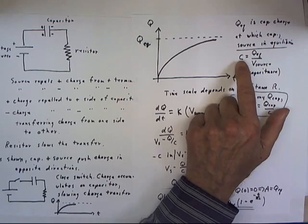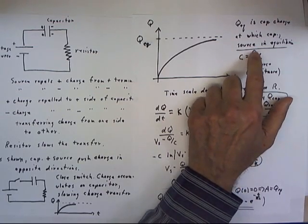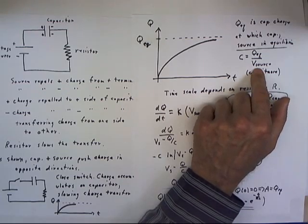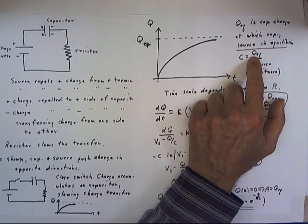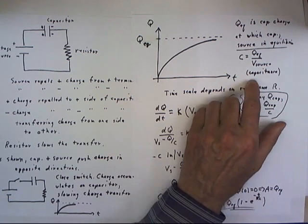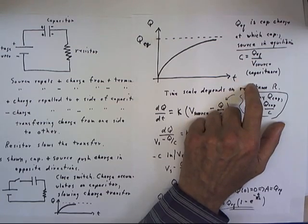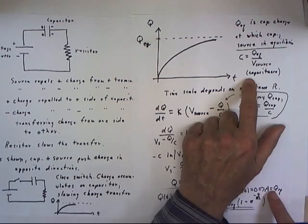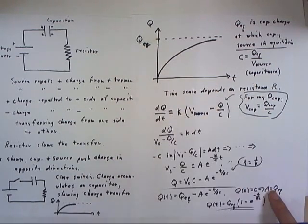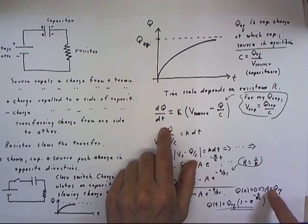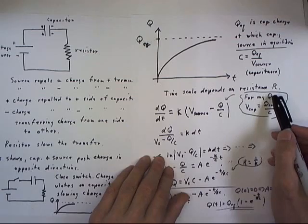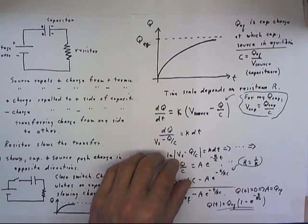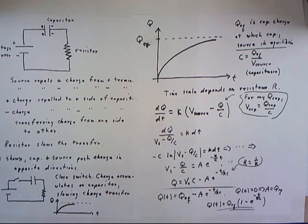We also define C, which we call the capacitance, to be the ratio of that equilibrium charge to the source voltage. More generally, the capacitance is just the ratio of charge to voltage, where the charge is the charge on the capacitor and the voltage is the voltage of the capacitor. The time scale of the graph depends on the resistance, and once the curve is drawn we can impose a time scale that fits whatever the resistance happens to be.